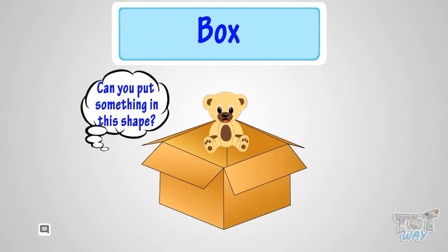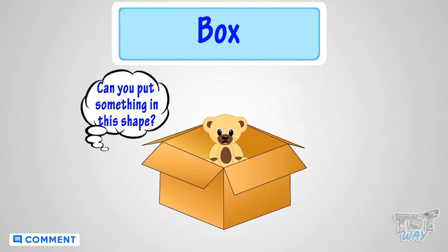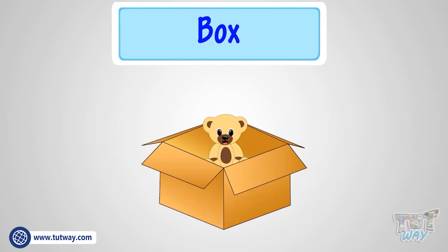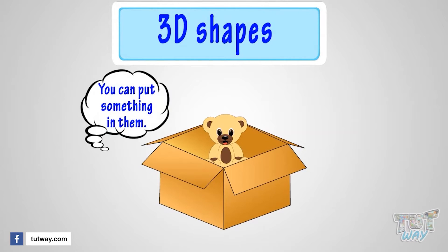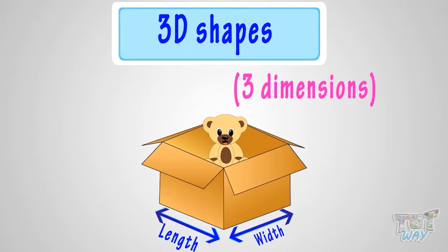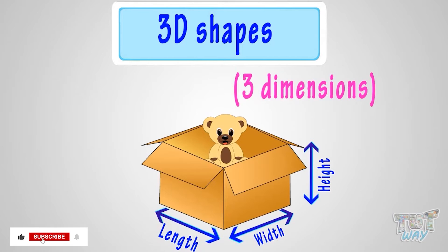Kids, can you put anything in this shape? Yes, you can put something in this shape. Such shapes where you can put something in them are called 3D shapes, and they are so-called because they have three dimensions — one more dimension than 2D shapes. 3D shapes are those in which we can put something in them, and they have three dimensions: length, breadth, and depth or height.